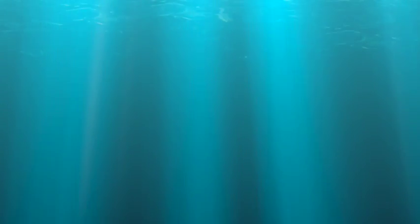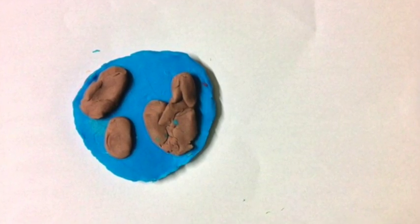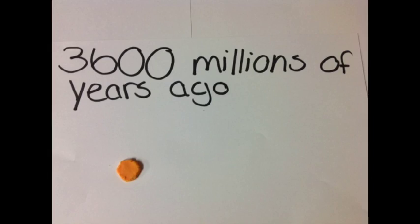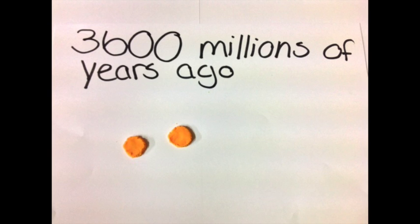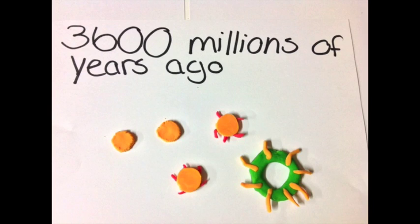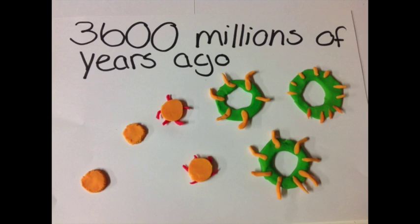The Earth starts to cool down and water that came from asteroids covers its surface. 3,600 million years ago, the first living organisms appeared. They were very simple bacteria and were able to get their energy from chemicals. These organisms evolved.